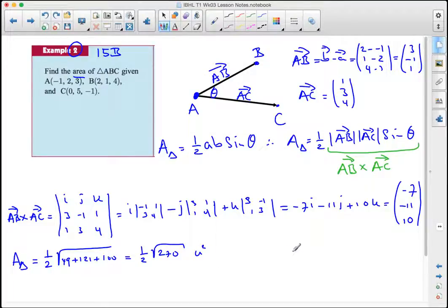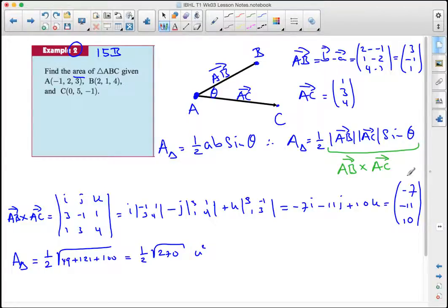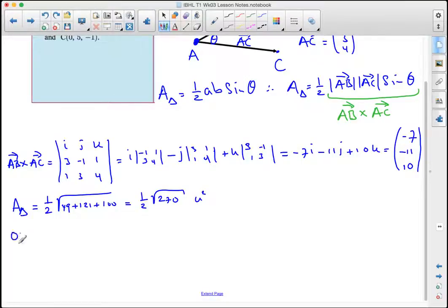Now suppose we do want to use sine theta and we don't want to use the vector product. We can do that, but then we will have to find theta first. To do that you need the cosine rule and the cosine rule led to this following equation here, which says that the in product of AB is the length of AB times the length of AC cosine theta.